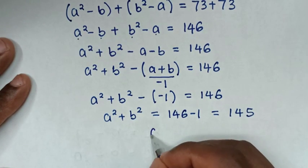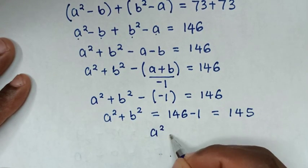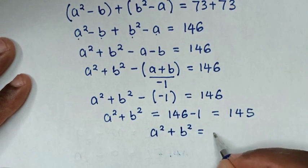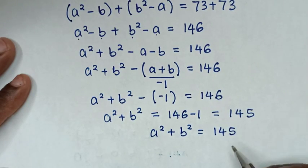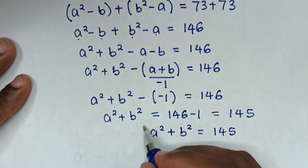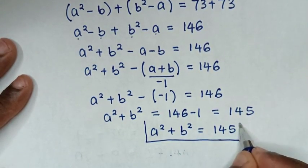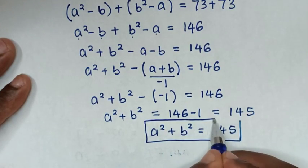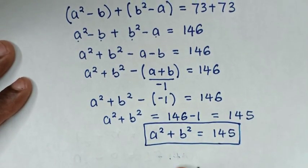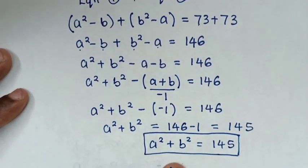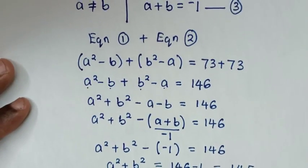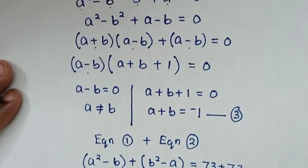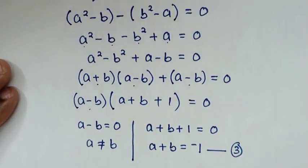Therefore, the value of A squared plus B squared is equal to 145. This is our final answer. Thank you. Don't forget to like and subscribe to my channel, and see you in the next video. Bye-bye.